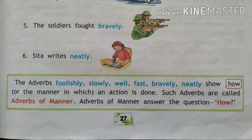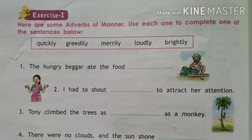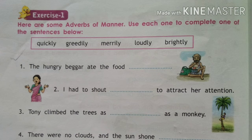When we have to find adverbs in a sentence, the first question you need to ask the verb is 'how?' — and if you get any answer, it is an adverb of manner. Here is an exercise. Some adverbs of manner are given in the box: quickly, greedily, merrily, loudly, and brightly. Notice they are mostly ending in '-ly'. Most words ending in '-ly' are mostly adverbs of manner — not always, but mostly.